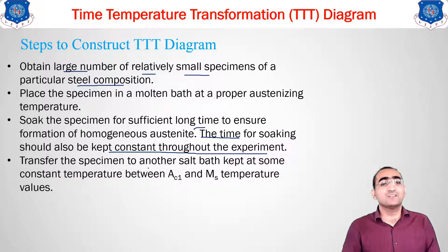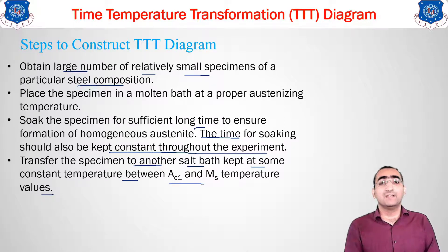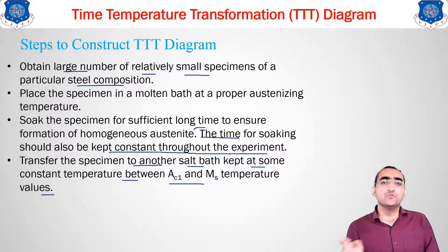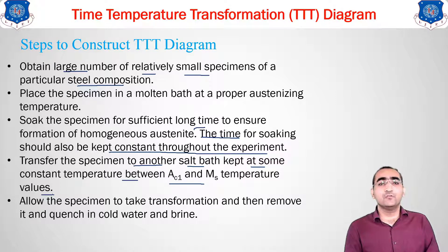After soaking, transfer the specimen to another salt bath kept at a constant temperature in the range between AC1 and MS. In this second bath, the transformation will start occurring. Allow the material to transform at that temperature, then remove the sample and cool it with water, brine, or atmosphere.